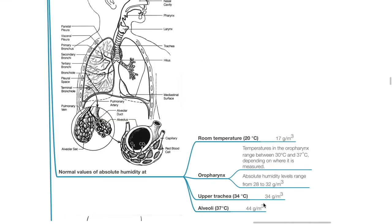Normal values of absolute humidity: at room temperature of 20°C it is 17 g/m³; in the oropharynx, the temperature range is 30 to 37°C and absolute humidity range is 28 to 32 g/m³; in the upper trachea at 34°C, absolute humidity is 34 g/m³; and in the alveoli at 37°C, the absolute humidity is 44 g/m³.